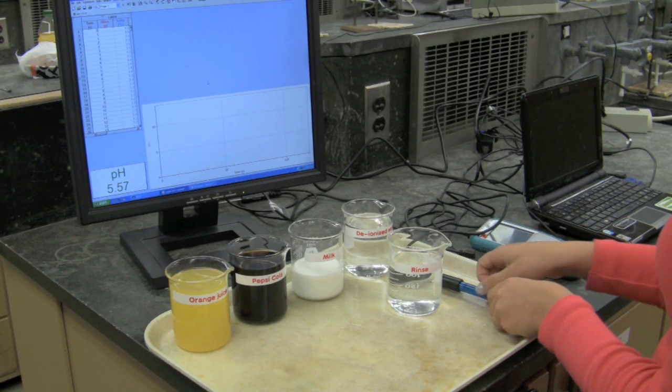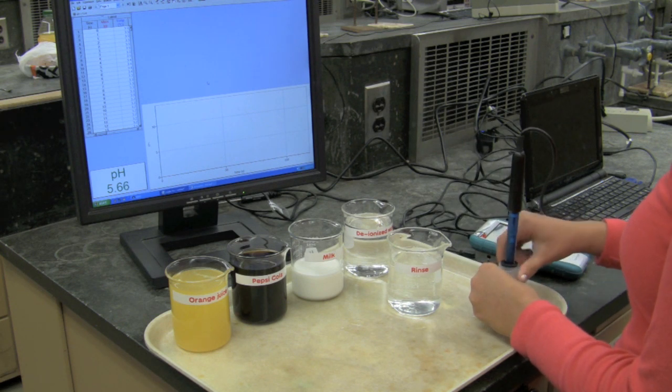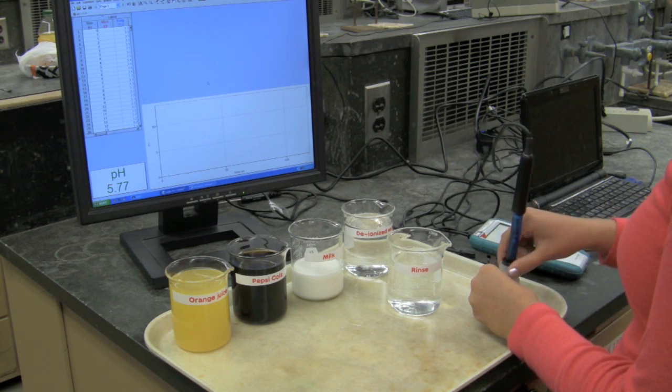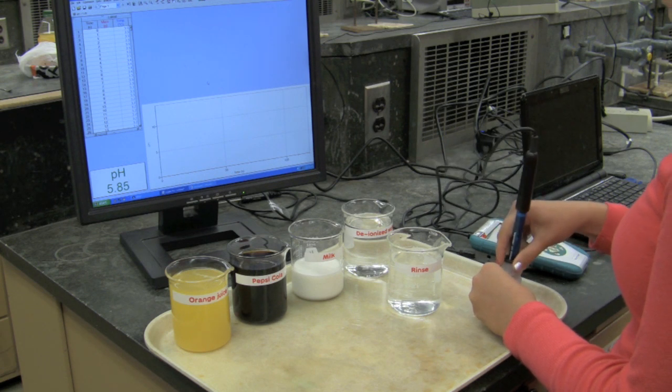A student will measure the pH of different solutions without visual aid. The student is removing the pH probe from its container and places it in a rinse for a couple of seconds.